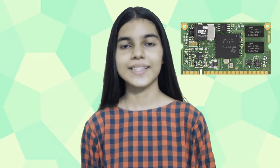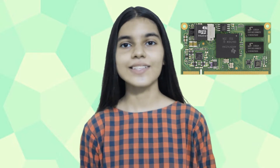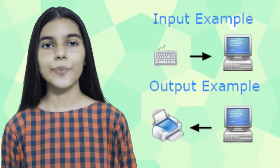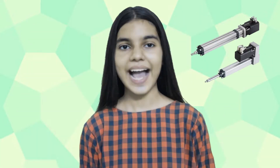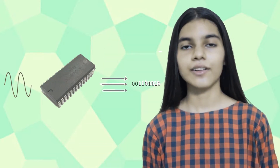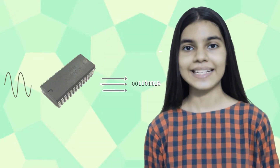An embedded system is a microprocessor-based system which is designed to perform a specific task. For example, a fire alarm is an embedded system — it will sense only smoke. An embedded system includes a microprocessor, input-output devices, actuator, analog-to-digital converter (ADC), and sensors.